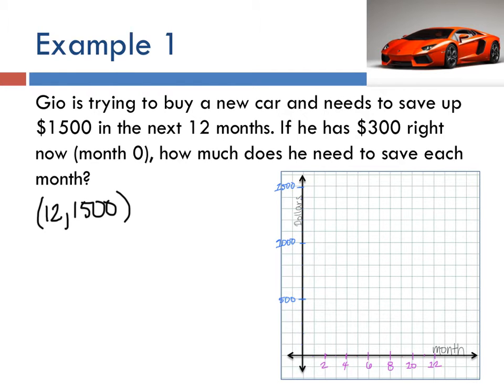If he has three hundred dollars right now in month zero, how much does he need to save up? So right now in month zero we have three hundred dollars. How did I come up with this? Well our X is our month and our Y is how much money we have.